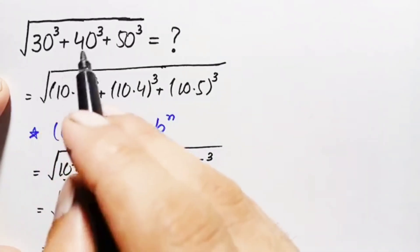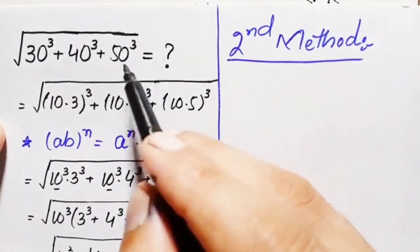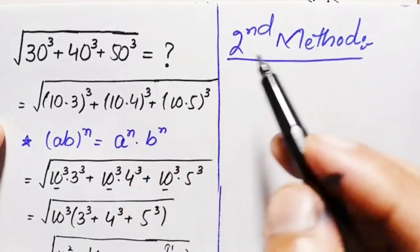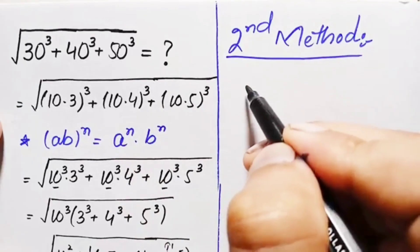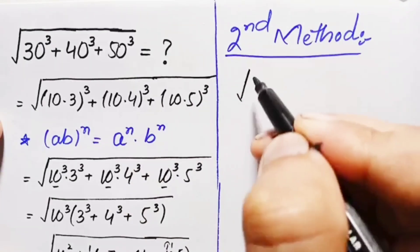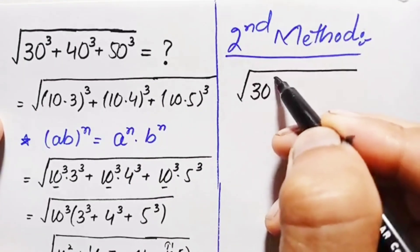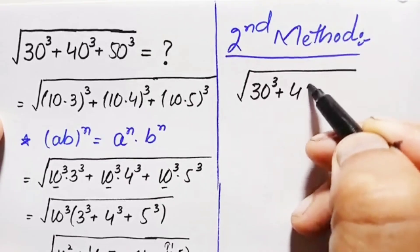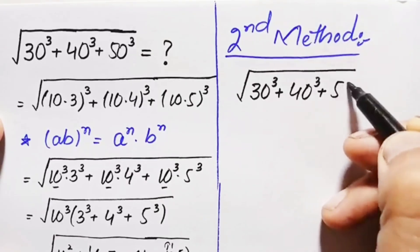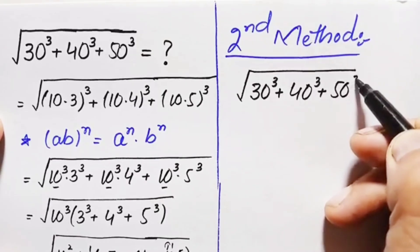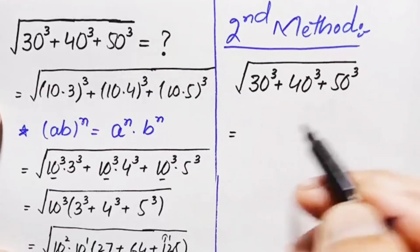Now I will try to solve this problem using the second method. We write our problem again: the square root of 30 cubed plus 40 cubed plus 50 cubed. This time, we will directly compute the value of each term.